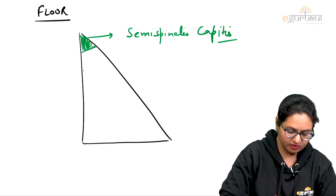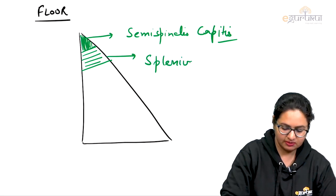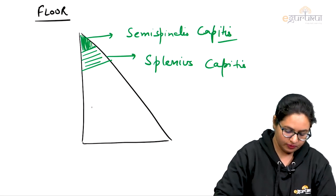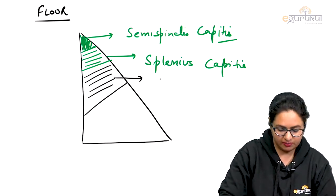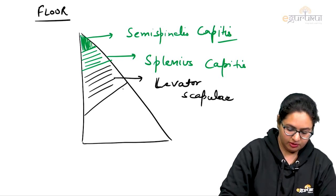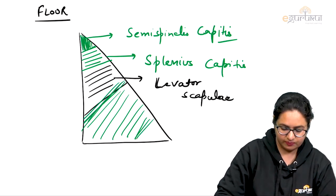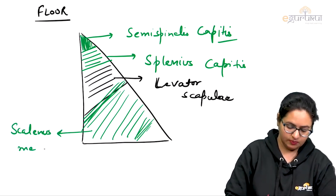Just below that we have the splenius capitis muscle. As we go still lower down, this is the levator scapulae muscle, and further lower down, these are the muscle fibers of the scalenus medius muscle.